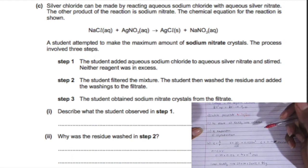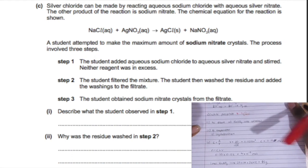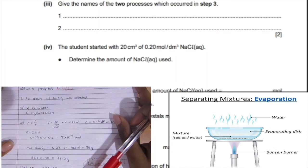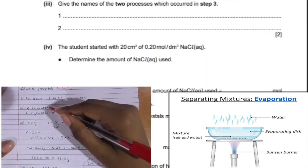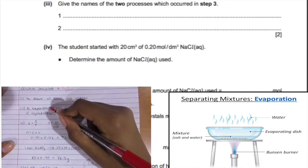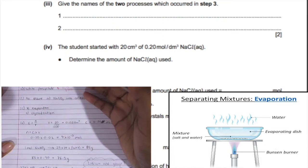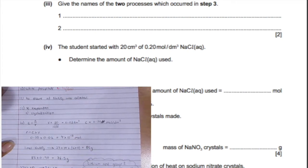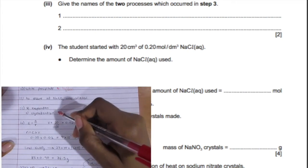For step three, what were the two processes? It was evaporation and crystallization. He had to go through these to end up with just the sodium nitrate without any water. The water simply evaporates and through crystallization you have the crystals of sodium nitrate.